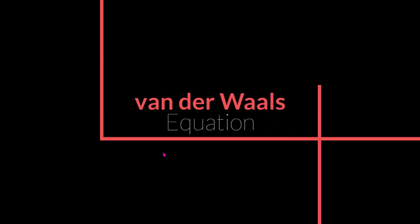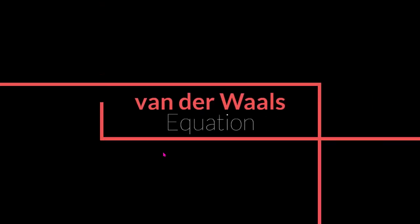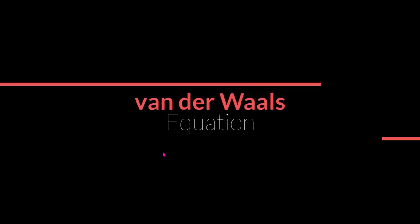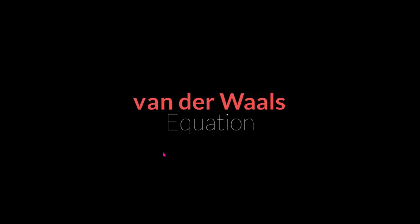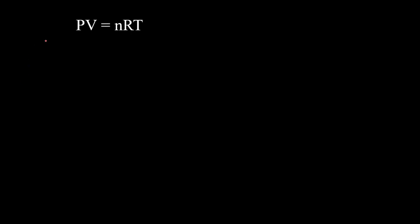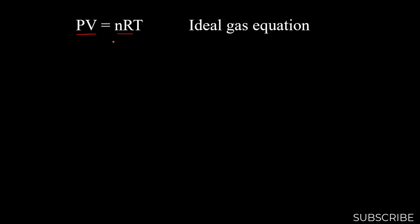In this video, we are going to look at Van der Waals equation. However, before we do so, we have to look at the ideal gas equation that relates pressure, volume, and absolute temperature. PV is equal to nRT, where n is the number of moles, R is the molar gas constant, and the rest are pressure and volume.